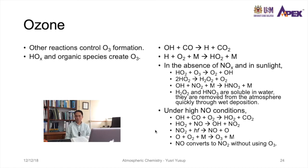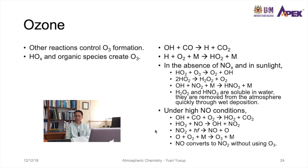There are also other reactions that allow ozone to accumulate — otherwise, there would be no net ozone buildup. HOₓ (hydrogen oxides) and other organic species can also create ozone. OH plus CO forms H and CO₂; that H reacts with O₂ and M to form HO₂. In the absence of NOₓ and in sunlight, HO₂ reacts with ozone to form O₂ and OH. Furthermore, two HO₂ molecules form hydrogen peroxide (H₂O₂) and O₂, and OH plus NO₂ plus M forms HNO₃. Both H₂O₂ and HNO₃ are very soluble in water and can be quickly removed by wet deposition.